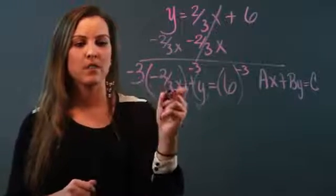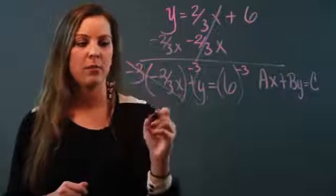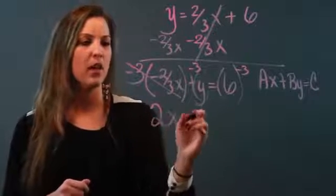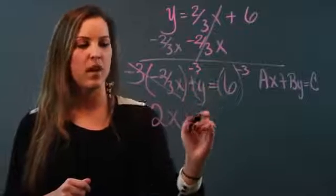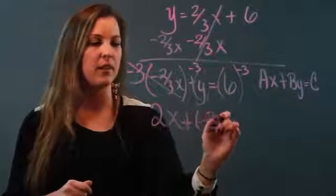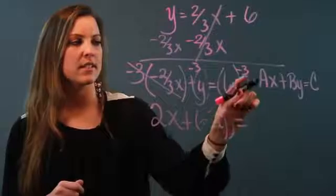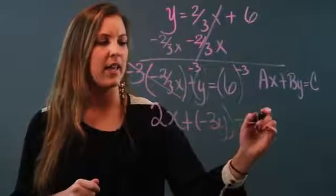So negative three divided by negative three is just one, and I'm left with 2x plus, that's negative three times y, which is negative 3y, equals six times negative three is negative 18.